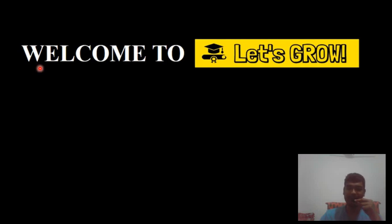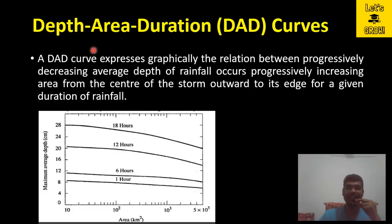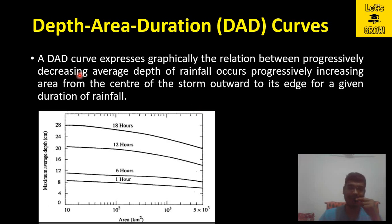Hello everyone, welcome back to our YouTube channel Let's Grow. Today's topic of discussion is Depth Area Duration curves, also known as DAD curves. A DAD curve expresses graphically the relation between progressively decreasing average depth of rainfall occurring over a progressively increasing area from the center of the storm outwards to its edge, for a given duration of rainfall.